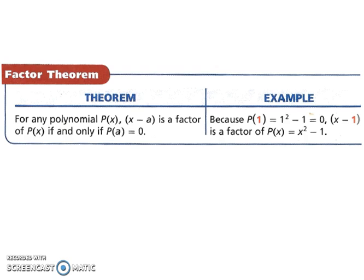Let's start with the factor theorem. For any polynomial P of x, x minus a is a factor of P of x if and only if P of a equals zero. Let's look at an example. Because P of 1 equals 1 squared minus 1, which equals zero, x minus 1 is a factor of P of x, which equals x squared minus 1.